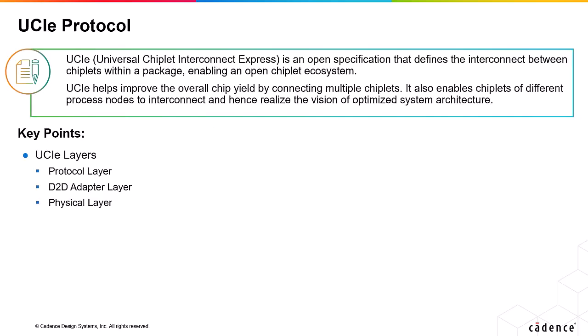UCIE is a Universal Chiplet Interconnect Express protocol that is an open specification used to connect two chiplets in a substrate. It helps to improve overall chip yield by connecting multiple chiplets. It also enables chiplets of different process nodes to interconnect and realize the vision of an optimized system architecture, allowing implementation with optimized sizes connected together in the same substrate, hence helping to create an optimized SOC system.